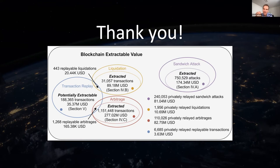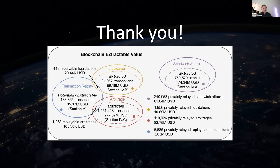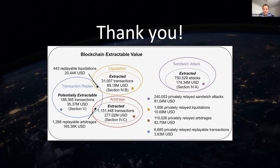Bernhard asked whether we checked where the money went. We did not for this paper, but we are currently writing a mixer paper where we're looking at whether and to what degree BEV extractors are using mixers. A question on whether the front-running-as-a-service is a centralized service or a smart contract: it's a centralized server — that's the bad thing about it. It has privileged information. I asked these providers about their terms of service and privacy policy — they don't reply.